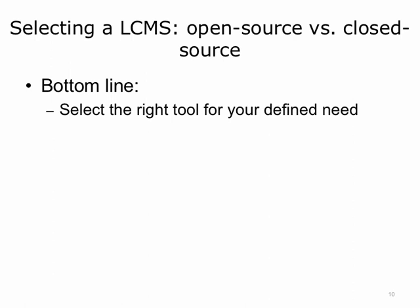Open source is available in source code form, for which the source code and certain other rights normally reserved for copyright holders are provided under a software license that permits users to study, change, and improve the software. A main principle and practice of open source software development is peer production by bartering and collaboration, with the end product, source material, and documentation available at no cost to the public.